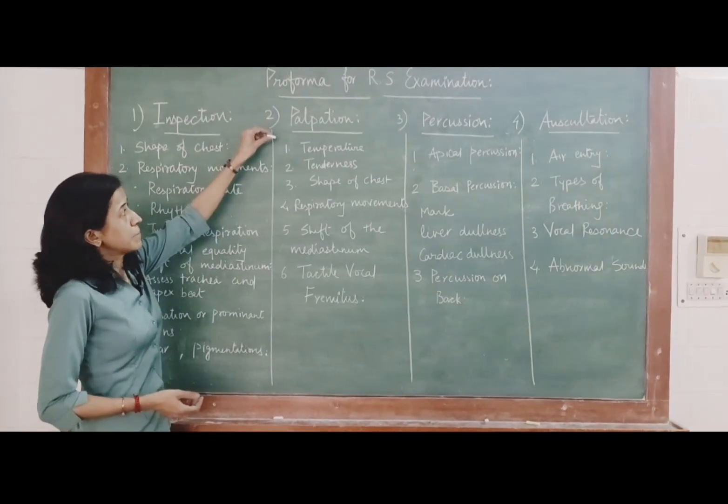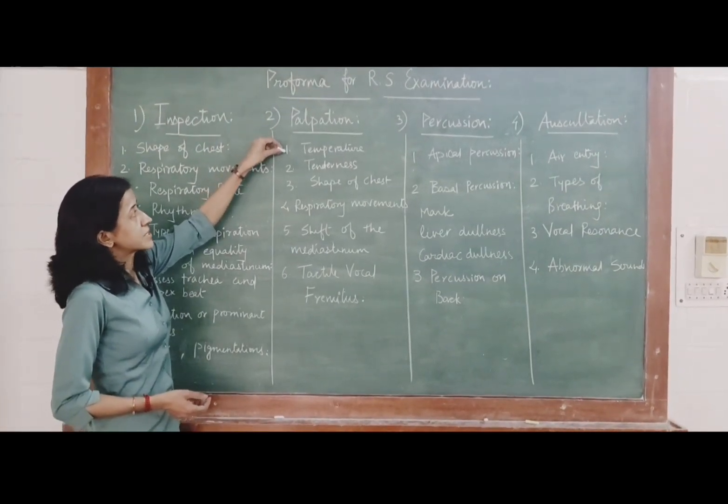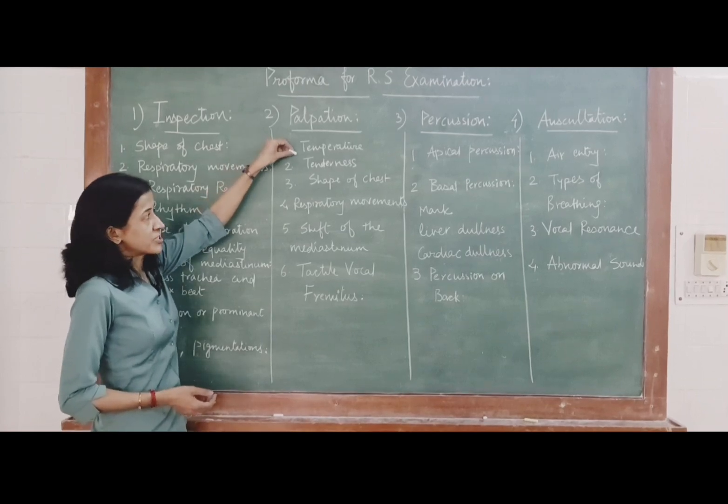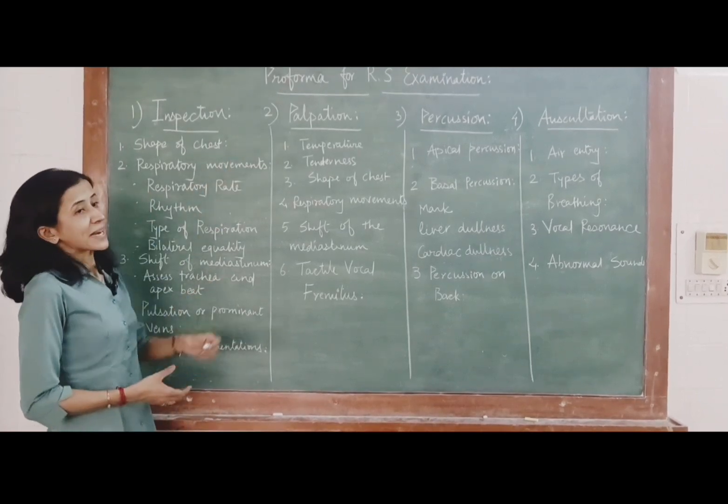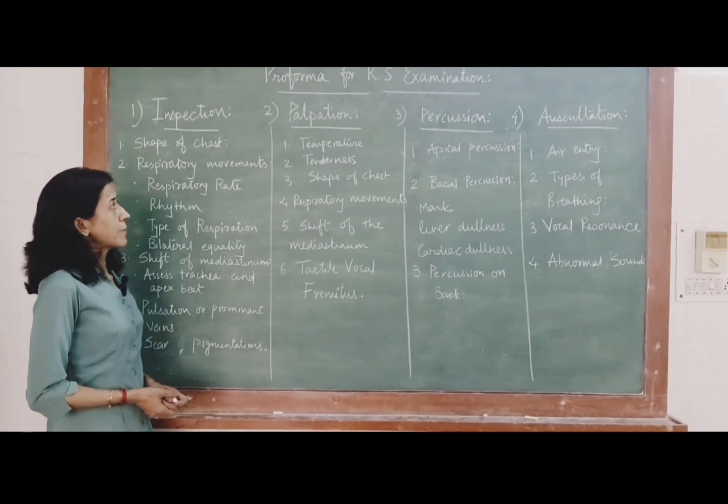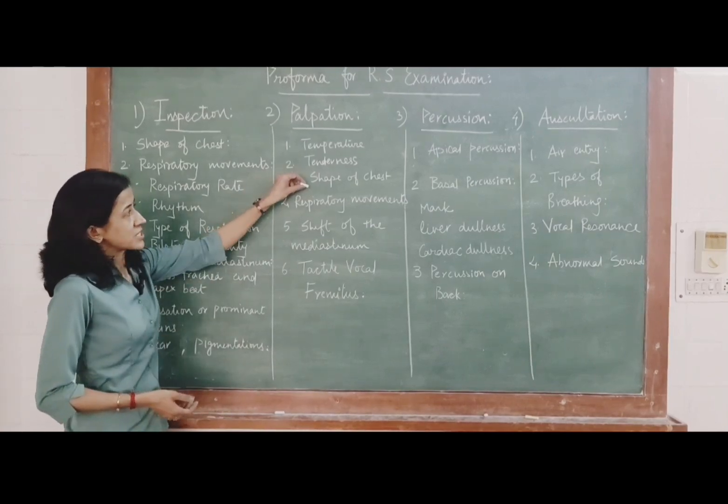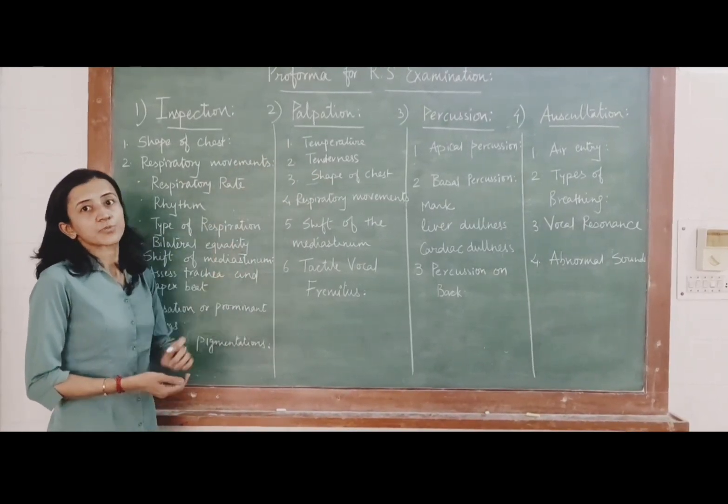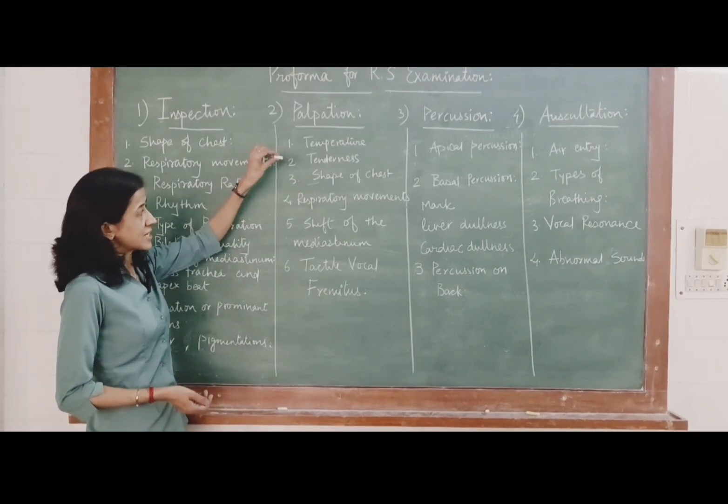Second point is palpation. In palpation, you have to palpate for any tenderness and examine temperature. All other inspectory findings are also confirmed by palpation. So, shape of the chest - here you have to measure transverse as well as anteroposterior diameter and write down your findings.